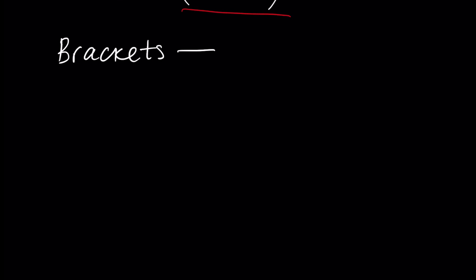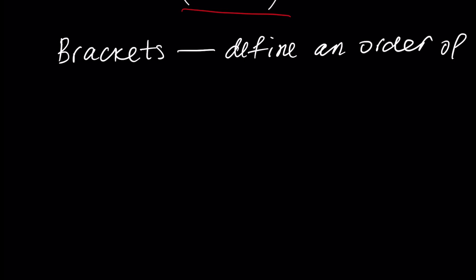Brackets define an order, or sequence, of operations. But in arithmetics, how do we define the order of performing operations?